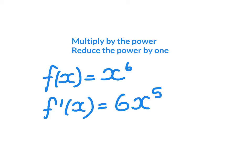So our derivative, f dashed x, is equal to 6 times x to the power of 5.